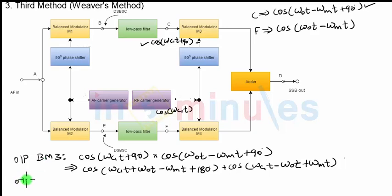Now, let us write down the output of balance modulator 4, which is the last balance modulator. The inputs to balance modulator 4 is the signal at point F, which is something we have written here. And the second input is my carrier signal with frequency omega c1 without any phase shift.